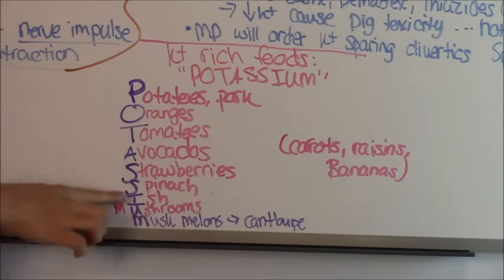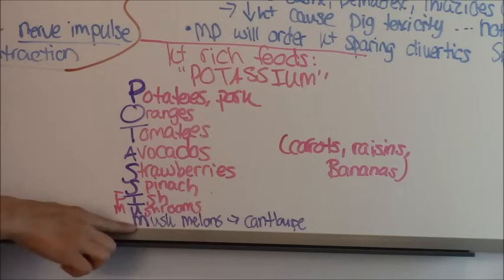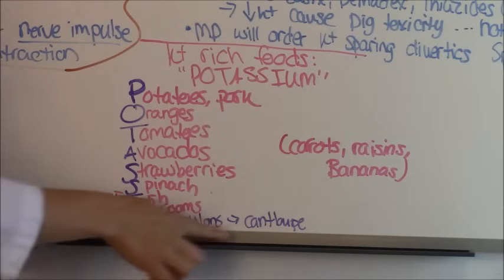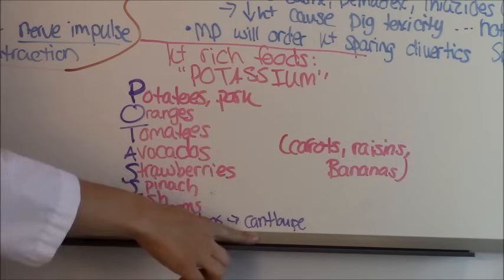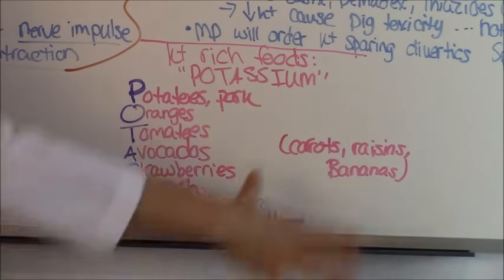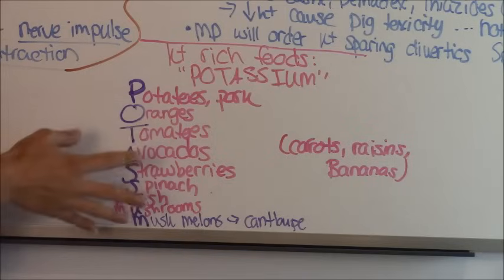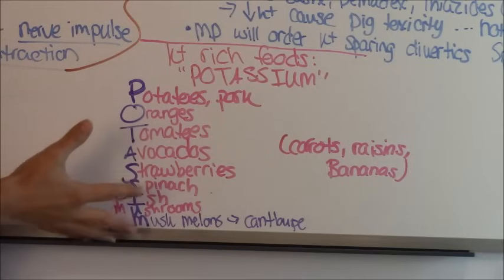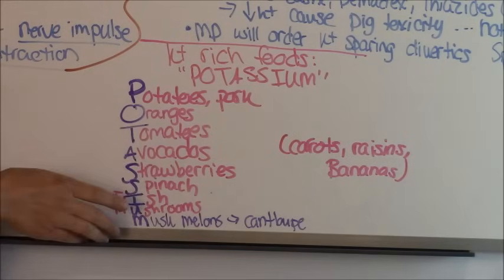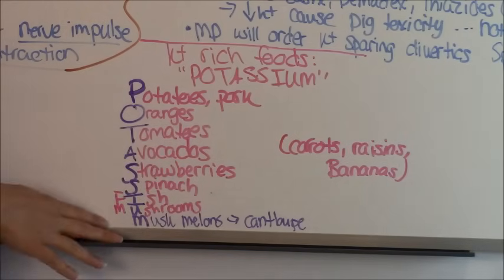U is for mushrooms, and M is for muskmelons, which is cantaloupe. And as a side, also carrots, raisins, and bananas. So that's just a clever way to help you remember potassium-rich foods, since exams love to ask you what foods are rich in potassium.